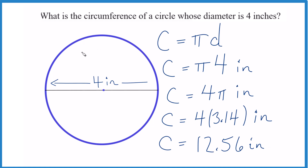There is another formula you might have seen: circumference equals two pi r. It's the same as this — because the radius is half the diameter, we need the two.